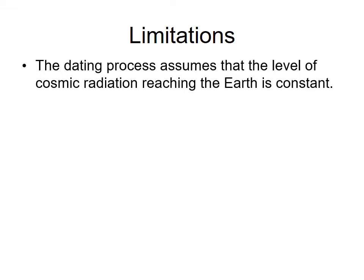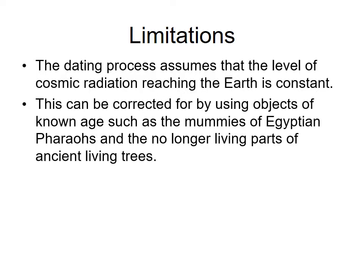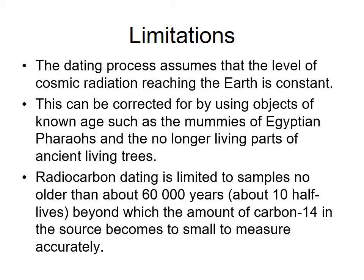The limitations are that the dating process assumes the level of cosmic radiation reaching the Earth is constant, though this can be corrected by using objects of known age, like pharaohs and mummies. Radiocarbon dating is also limited to samples no older than about 60,000 years — roughly 10 half-lives — because then it gets very hard to detect the carbon-14 that's left.